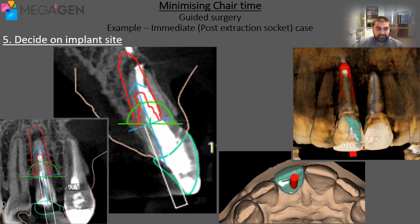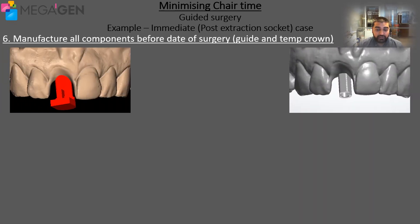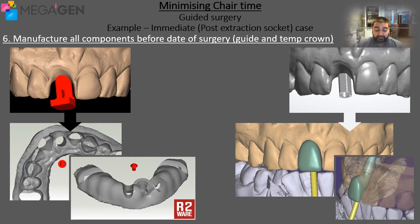The next step is to decide on an implant site. This is the stage where we assess the quality of the bone and we have a look at the space that we have to work with. We can decide on the implant dimensions that we would like to use and the exact angle and position of this implant within the jaw. Once confirmation has been given by the dentist, we can then move on to the production stage, where we extract two pieces of information from the software to aid us with the production of the stent and also the screw-retained temporary crown.